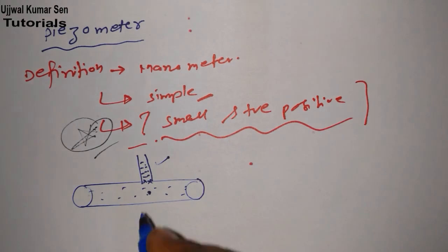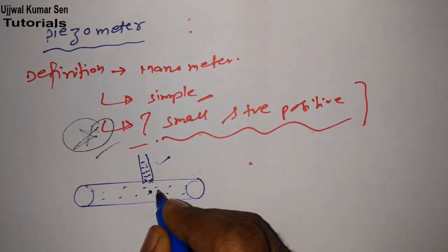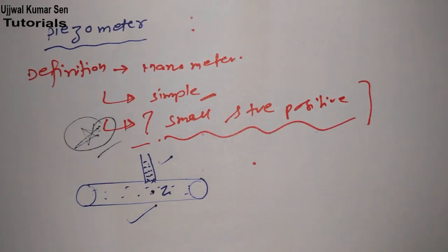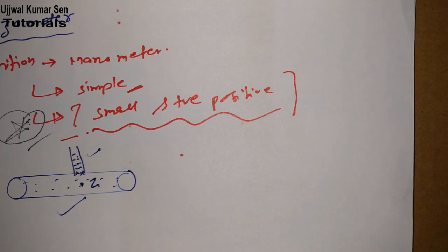Suppose this is point Z. At this point how we can find out? To understand this thing we have to draw another diagram and from that diagram we can understand the whole concept.